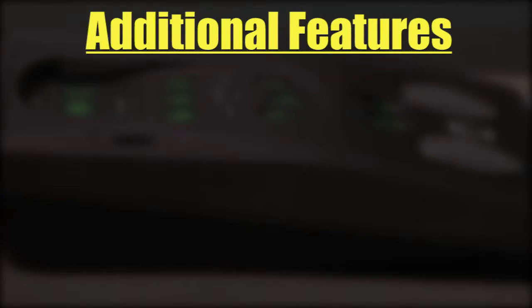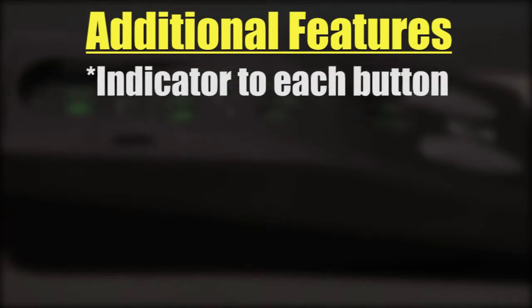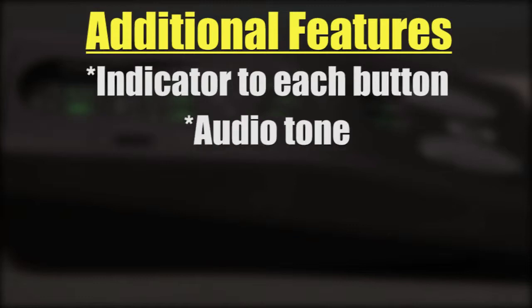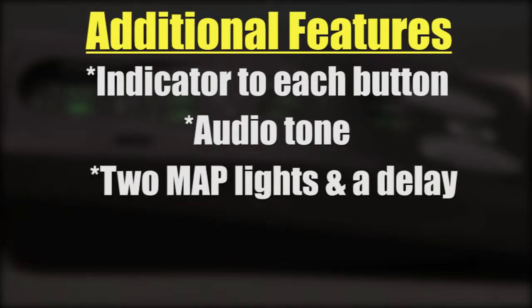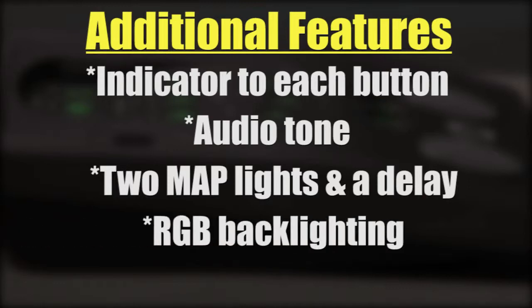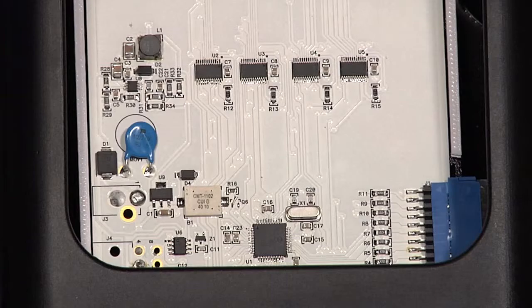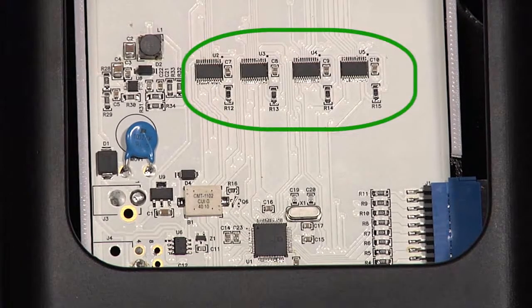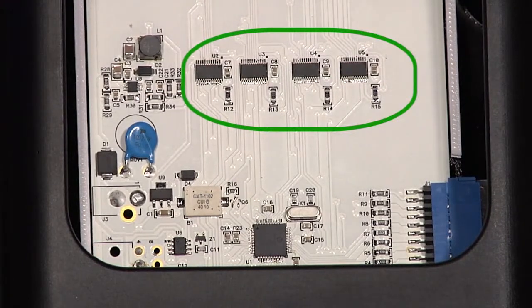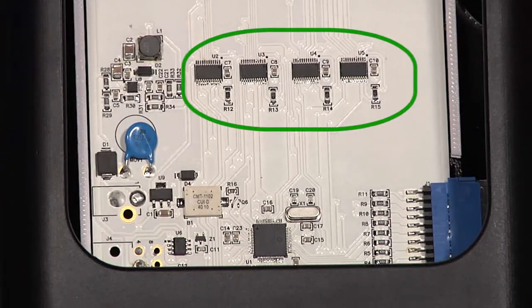The following items were also added: an indicator to each button except for the map lights, an audio tone every time a button is pressed, two map lights and a delay timer to theater dim the map lights, RGB backlighting, and CAN and LIN communications. We have four LED drivers — one for the red portion of the RGB LED, one for blue, one for green, and a fourth LED driver for the amber indicators.